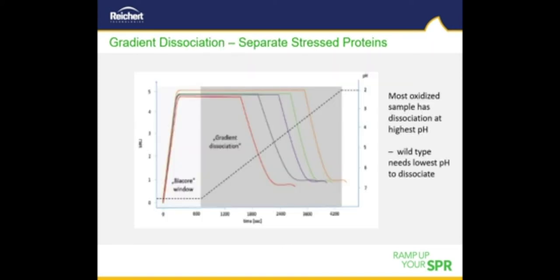However, once a gradient is applied to the dissociation step — using PBST at pH 7.4 for buffer 1 and PBST at pH 2 for buffer 2, applied from 0 to 100% — significant differences in binding patterns between wild-type and stress variants of the IgG1 become apparent. Thus, the SPR Plus could be a valuable tool for monitoring the structural integrity during upstream and downstream process development of therapeutic antibodies.